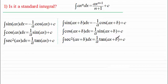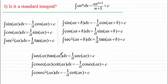And you should also be familiar with these results here. The integral of sec ax tan ax, that turns out to be 1 over a sec ax. And the integral of cosec ax cot ax is minus 1 over a cosec ax. And finally, the integral of cosec squared ax is equal to minus 1 over a cot ax. And again, not forgetting the constant of integration c.